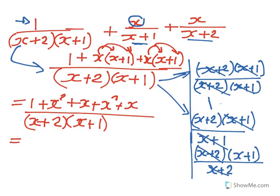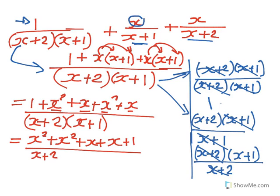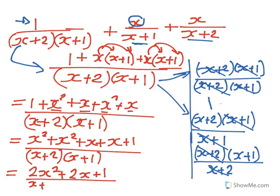Collecting like terms: x squared plus x squared gives 2x squared, and x plus x plus x gives 2x, plus 1. This equals 2x squared plus 2x plus 1, all over (x plus 2)(x plus 1).